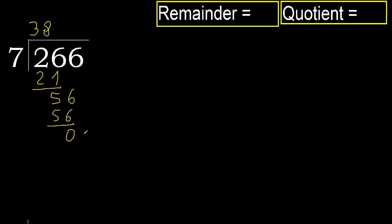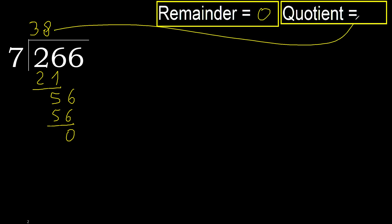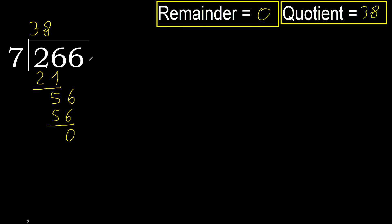There is no next number, therefore finished. 266 divided by 7 is 38.